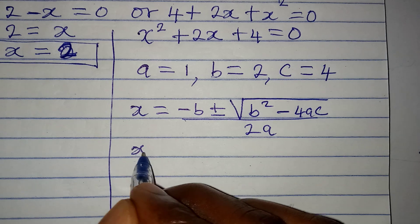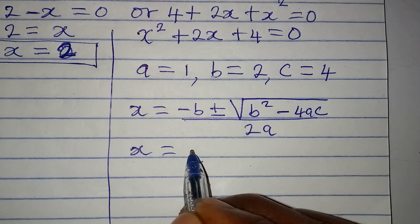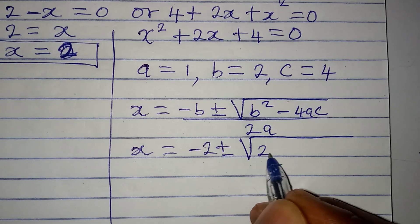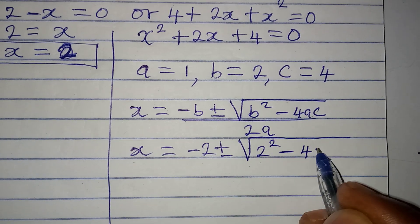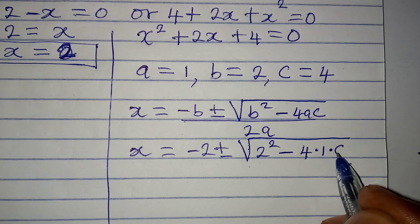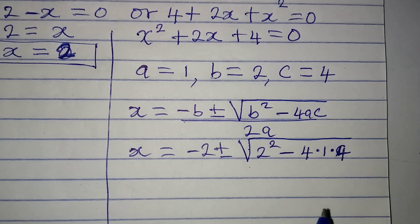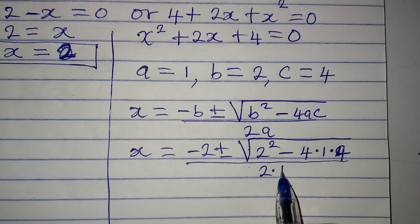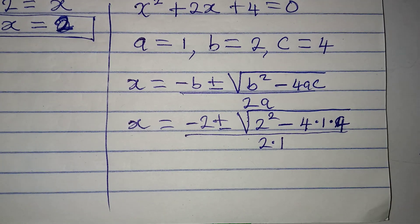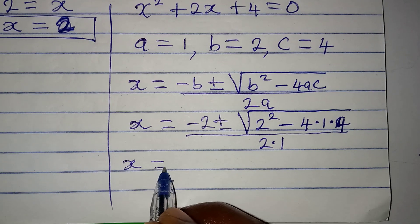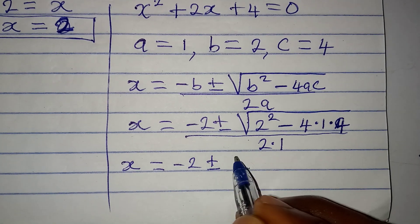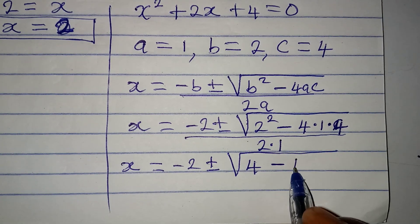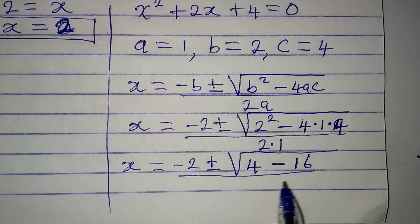The formula is x equals negative b plus or minus the square root of b squared minus 4ac, all over 2a. Substituting: x equals minus 2 plus or minus the square root of 2 squared minus 4 times 1 times 4, all over 2 times 1. So we have 4 minus 16, giving minus 12 over 2.